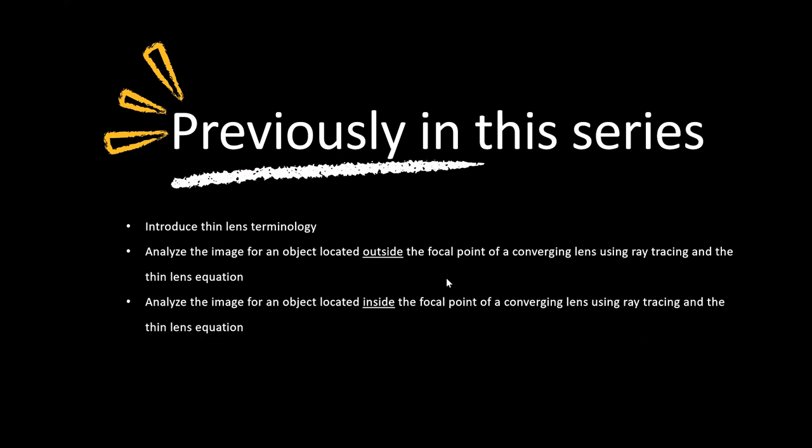Previously, we introduced thin lens terminology. Then we analyzed the image of an object sitting outside the focal point using two techniques, ray tracing and thin lens equation. We did the same, but now the object is inside the focal point. So we looked at what kind of image we get, again, using these two techniques. And then we did exercises.